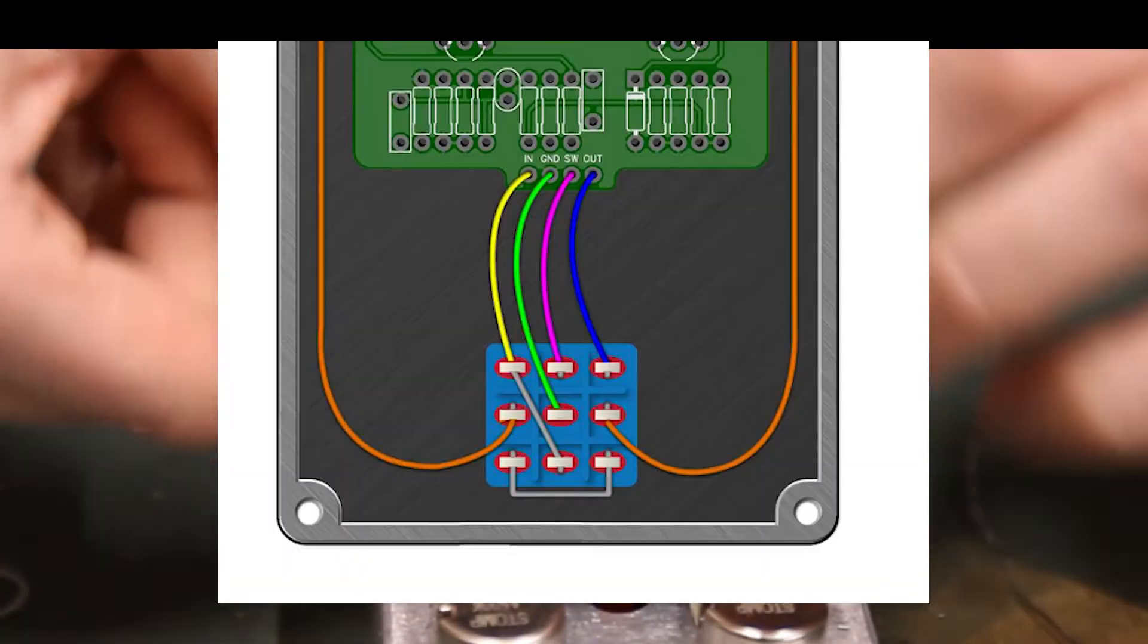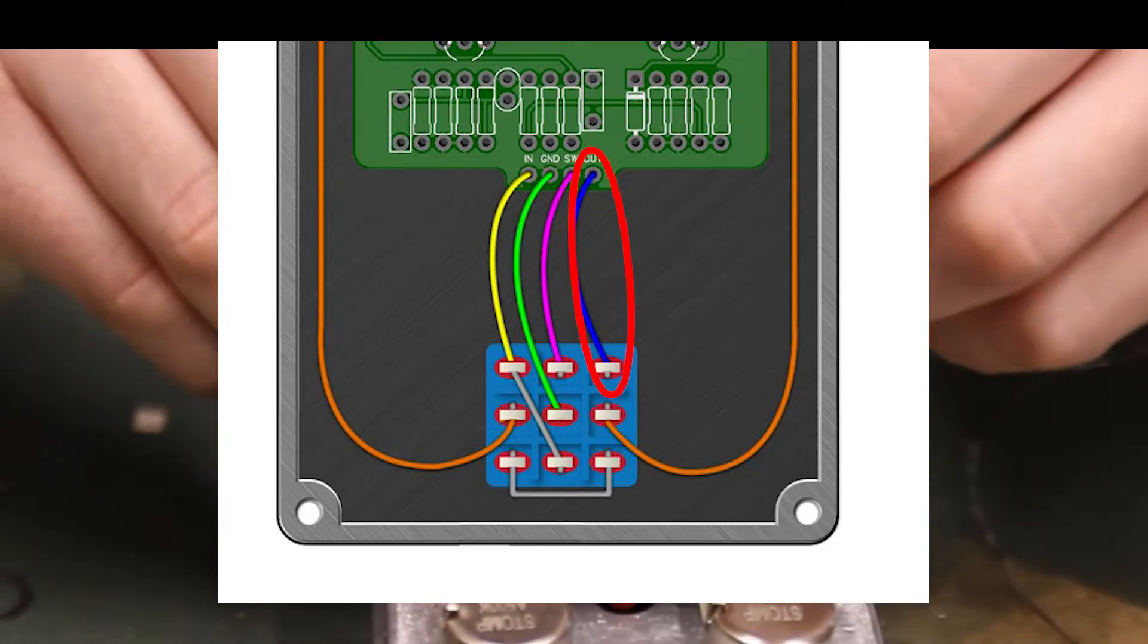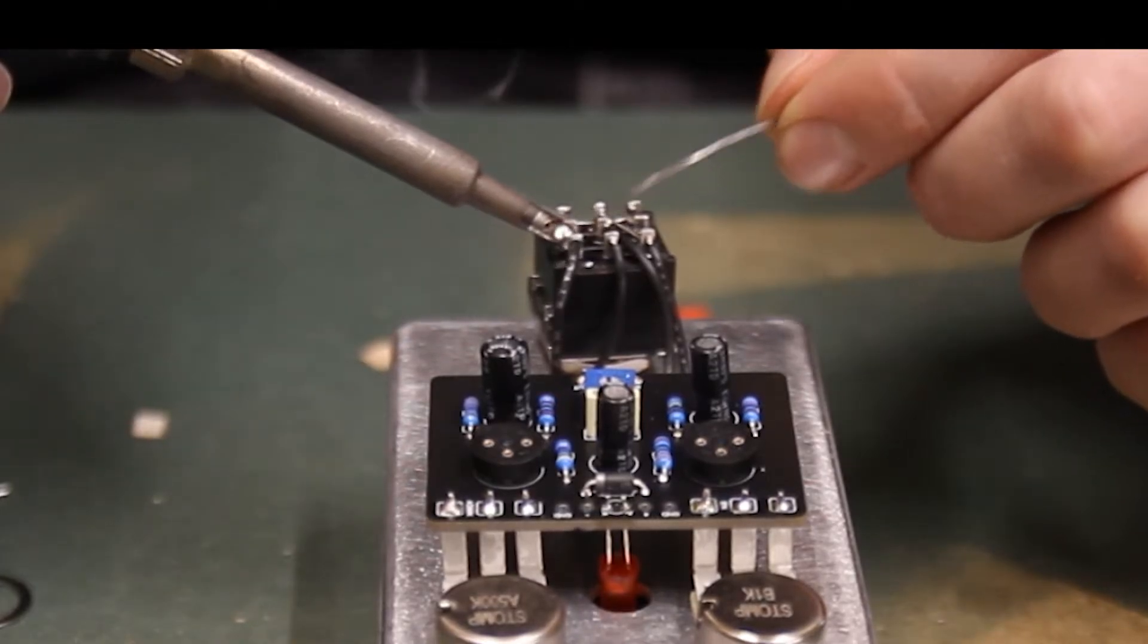Next, solder the input wire, which is the blue wire in this diagram. It's labeled OUT on the PCB. Solder it in place, again being careful not to touch or melt other wires nearby.